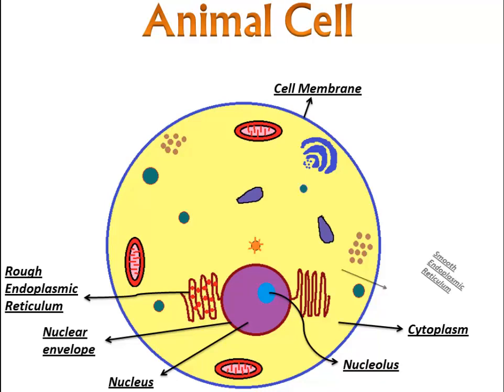And next is smooth endoplasmic reticulum. It does not contain any ribosomes and it appears smooth. Both endoplasmic reticula are networks of membranous canals filled with fluid. They carry materials throughout the cell, and both are the transport system of the cell.